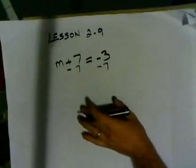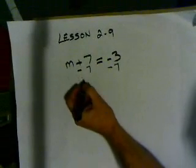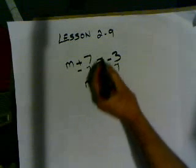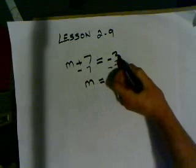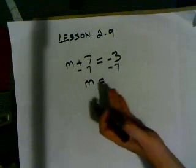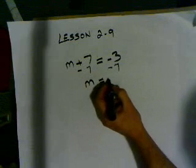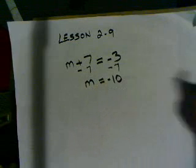Simplify. Bring down what we've got. We have m equals negative 3 minus 7. I'm 3 in the hole, I'm going 7 more in the hole. So now I'm at negative 10.